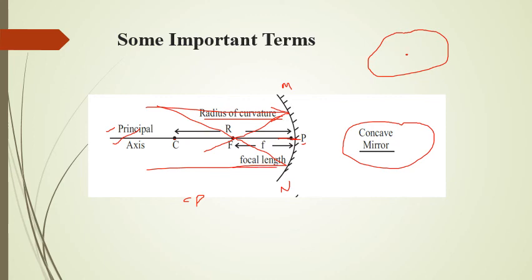The radius of curvature is the distance between the center of curvature and the pole — that is CP. Focus is the point through which all parallel rays passing along the principal axis converge after reflection. The distance between the focus F and the pole P is called the focal length. MN is the diameter of the mirror, which is called the aperture. So these are the important terms, and that's all for this session. In the next session we will discuss the concave mirror in detail. Thank you everyone.